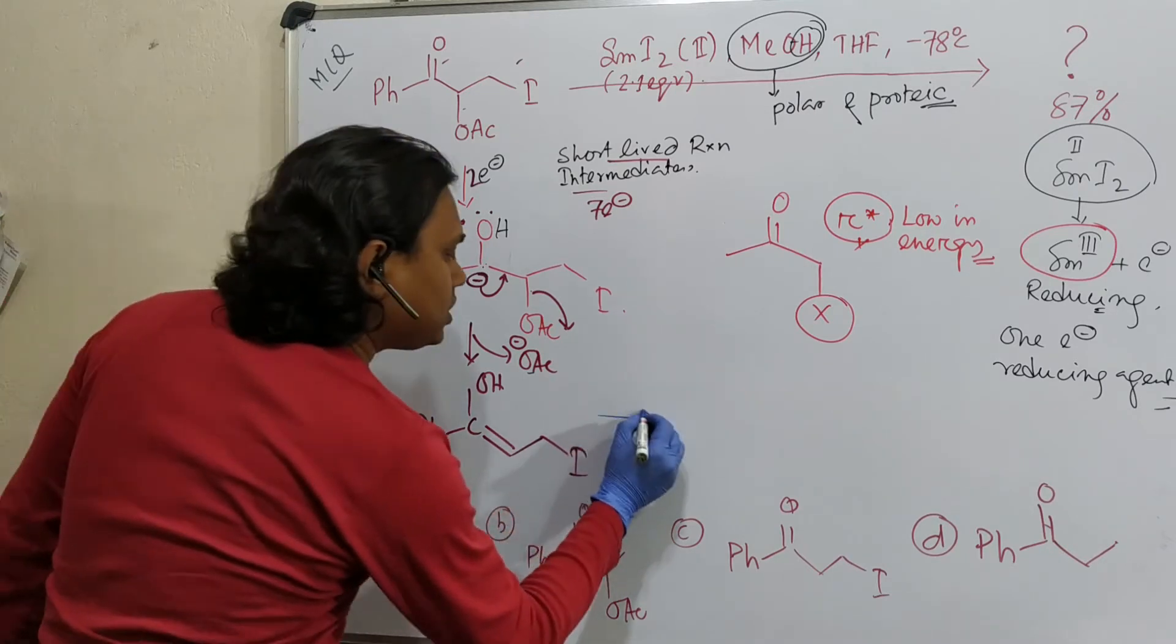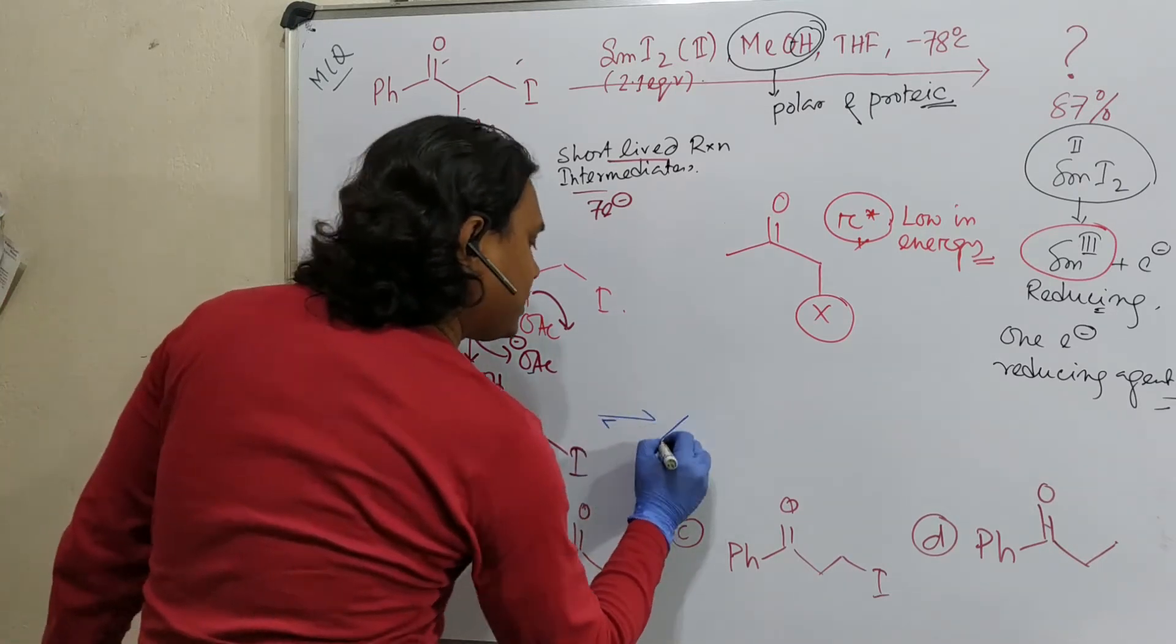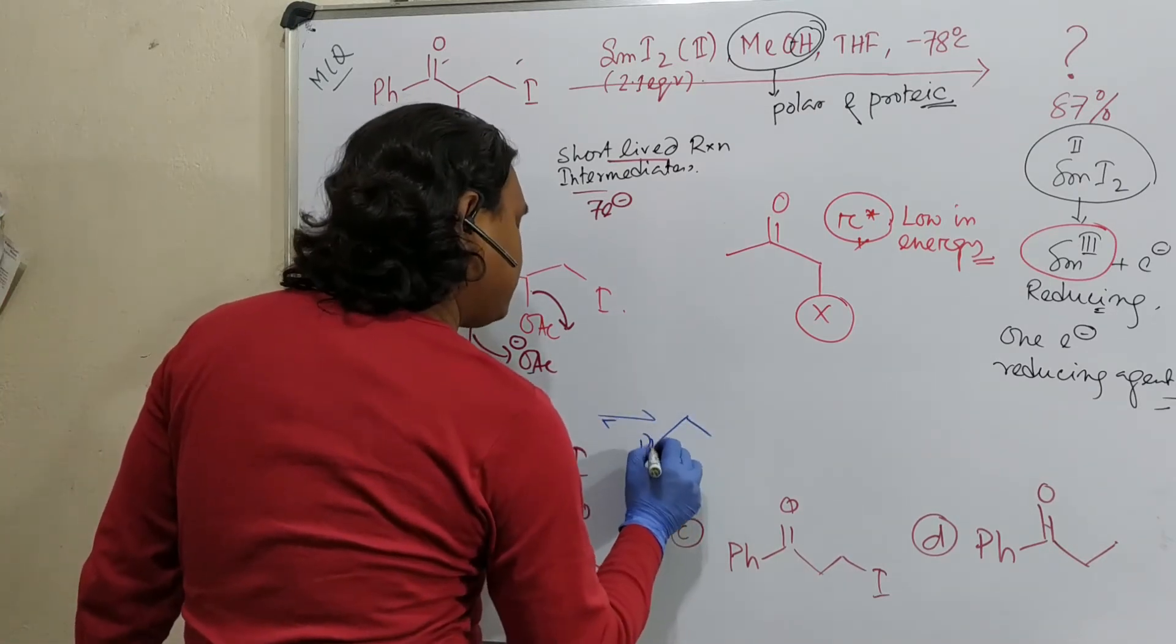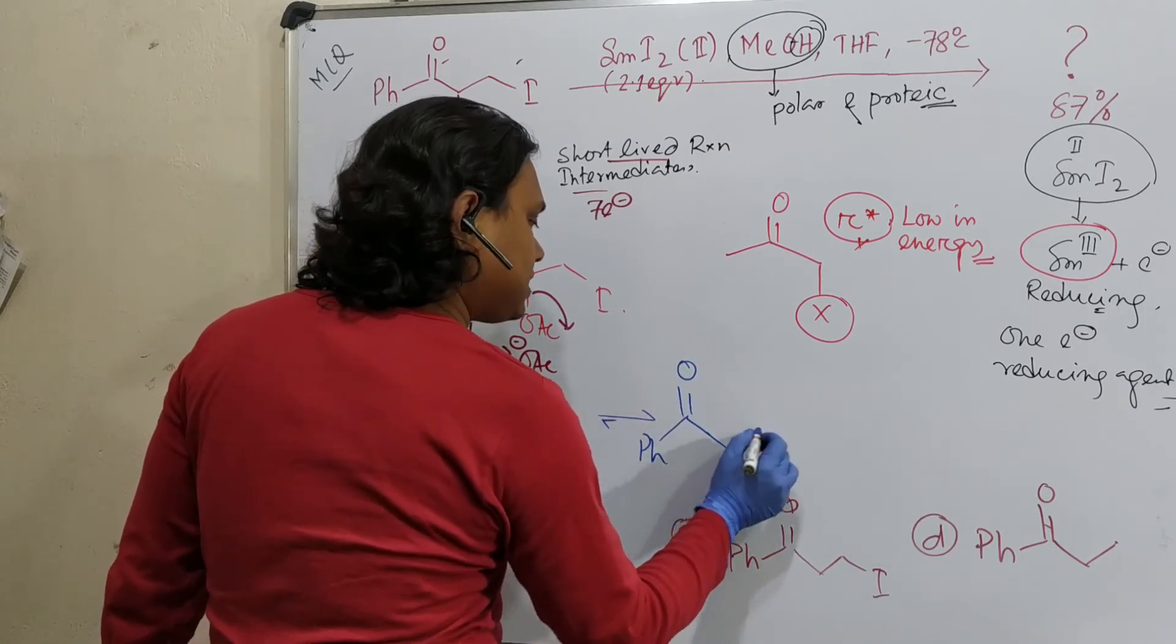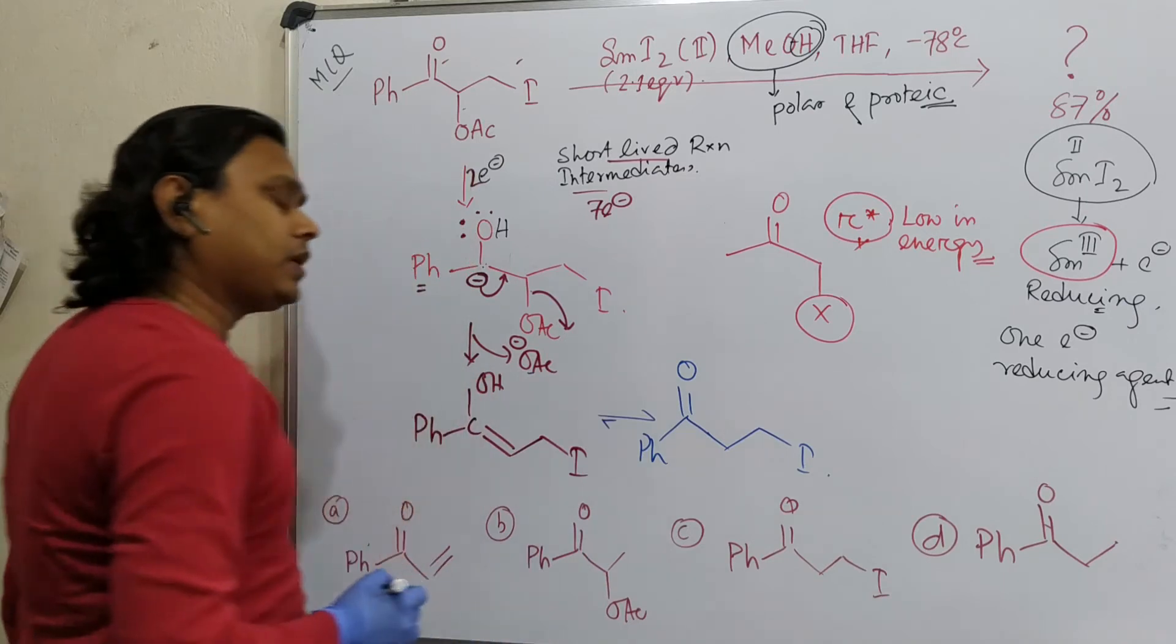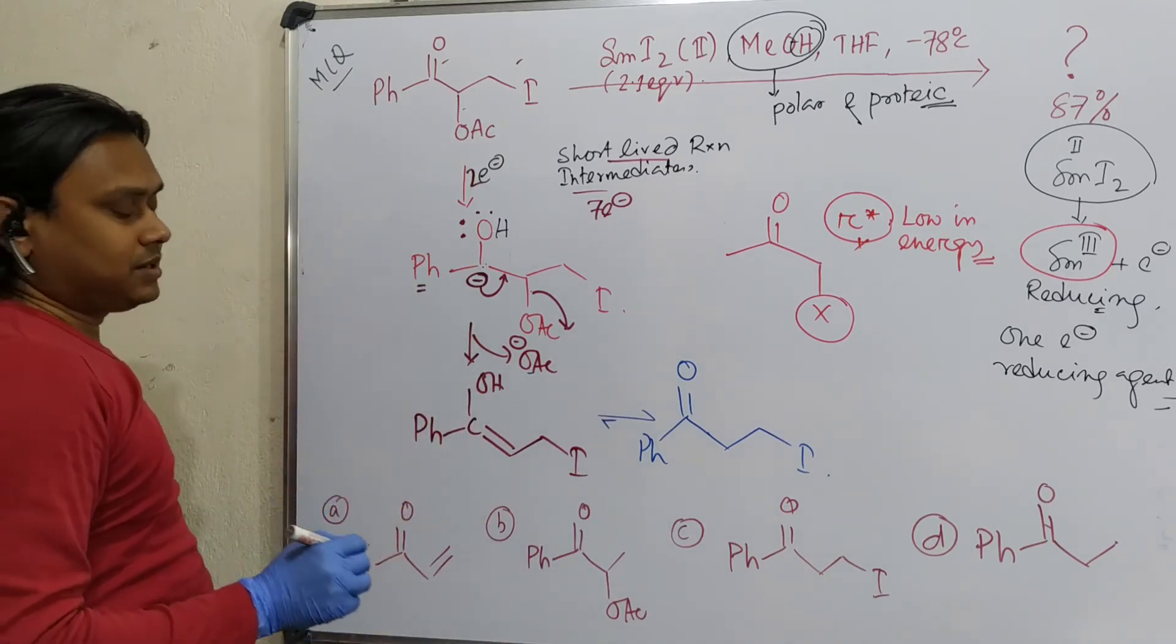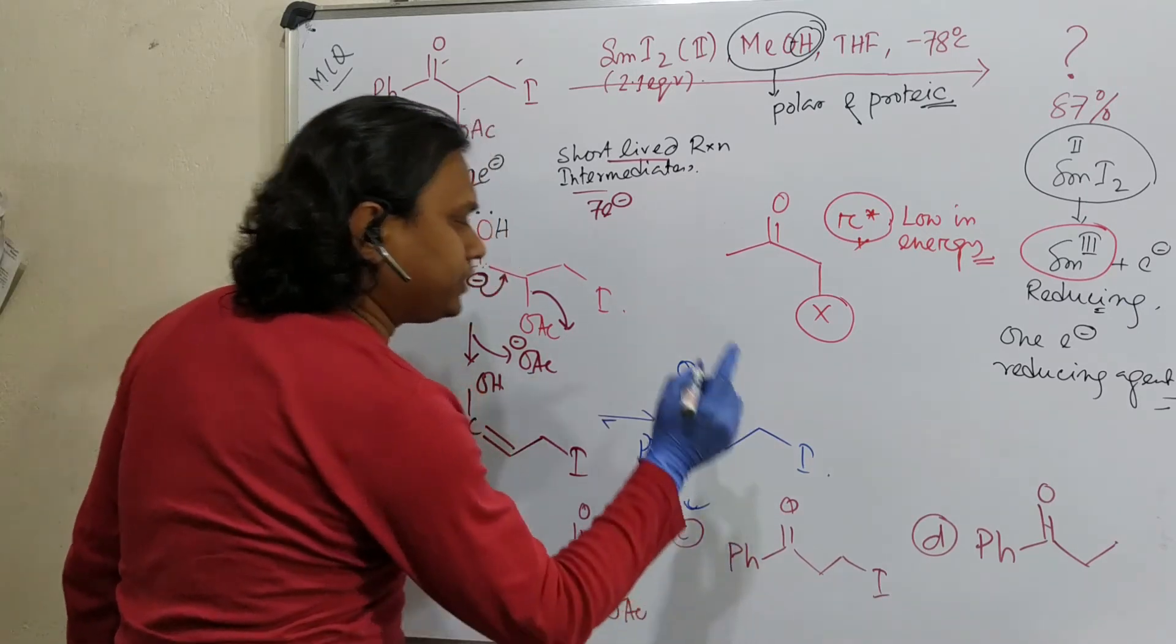So this is actually, you know that, it will instantly undergo tautomerization and the equilibrium will prefer to remain in the corresponding keto form. So this and this is the iodide. So this is the product.